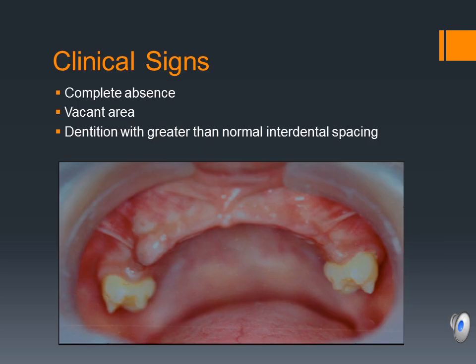Clinical signs of missing teeth include the complete absence of a tooth in clinical and radiographic evaluation. The absence of the tooth will most often display as a vacant area in the dentition or a dentition with greater than normal interdental space. In cases of delayed eruption, clinical evaluation will display the absence of the tooth, but radiographic evaluation will present with evidence of the developing tooth.